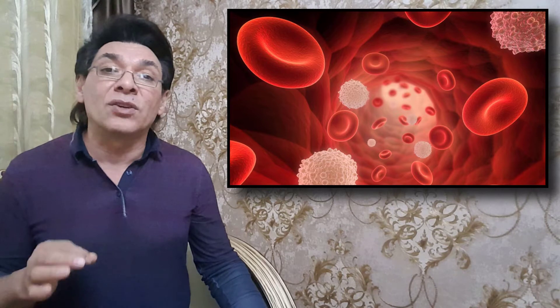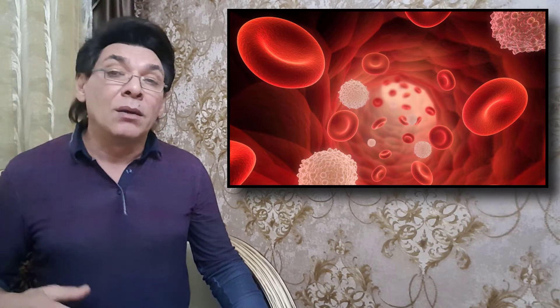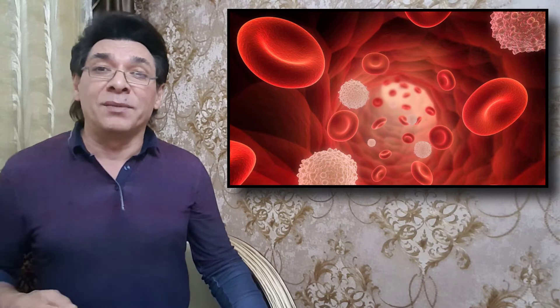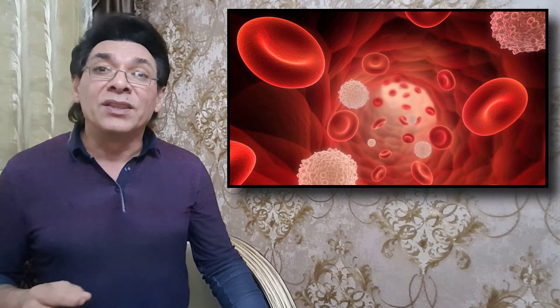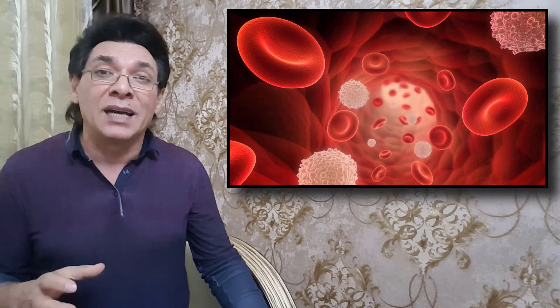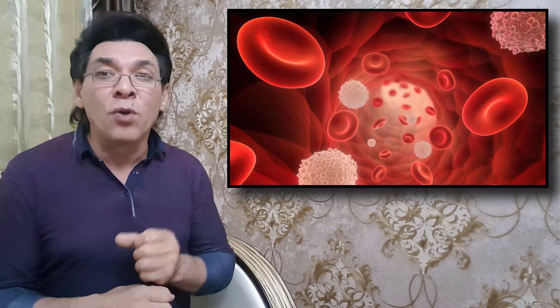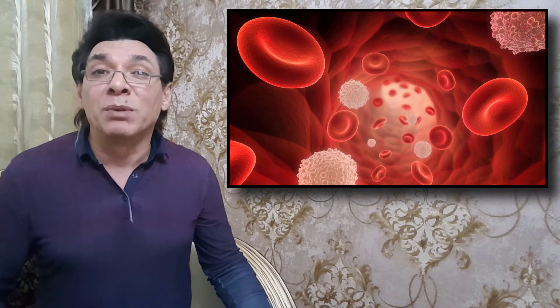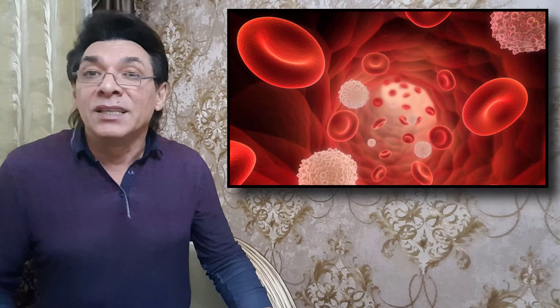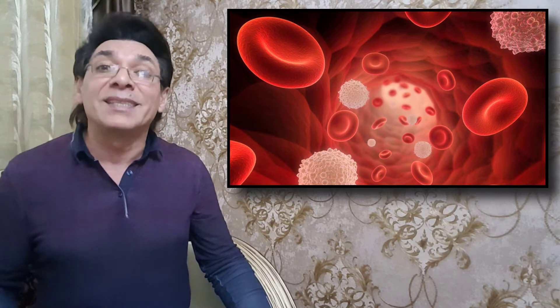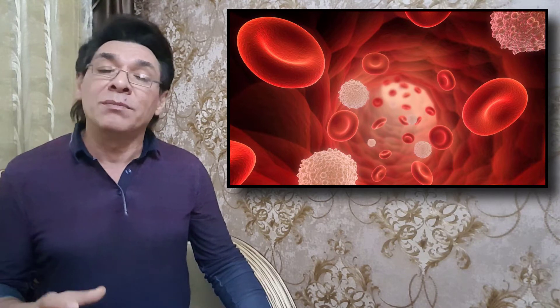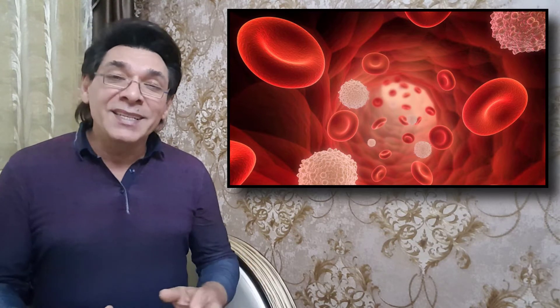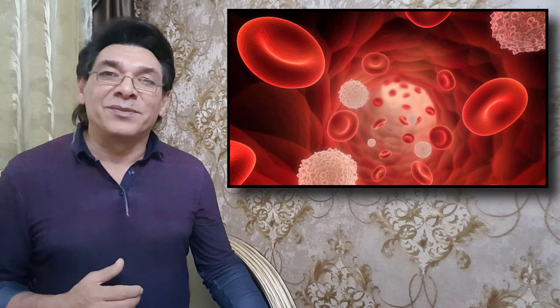When damage to the vessels results in bleeding, blood platelets and certain proteins dissolved in the plasma — the fluid portion of the blood — interact to block the ruptured areas of the blood vessels involved. This protects the body from further blood loss. This also contributes to maintenance of homeostasis.